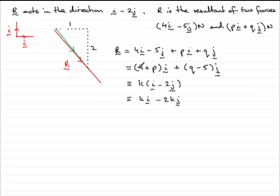Now, if I'm saying that this vector is identical to this vector, then I can compare the components. If I compare the i components, what I've got is that 4 plus p is equal to k. Or I could just say that therefore k is equal to 4 plus p.